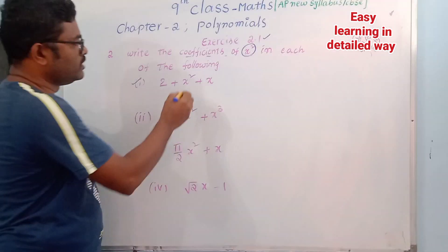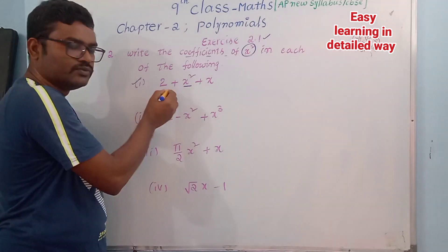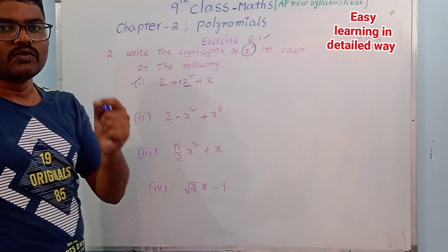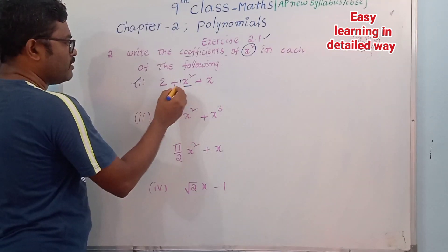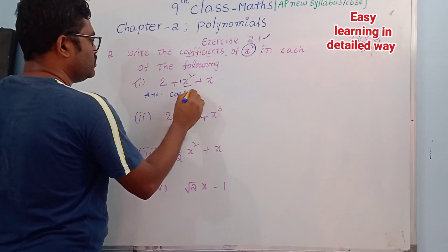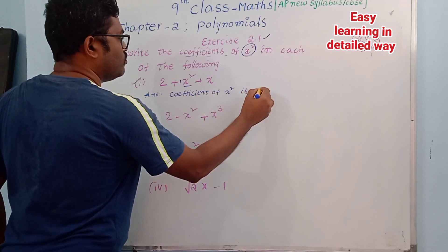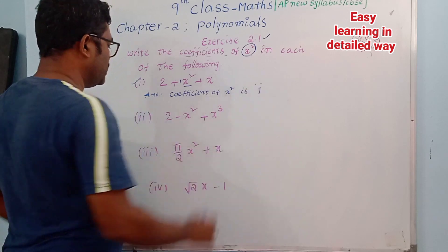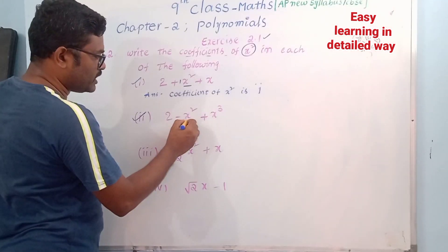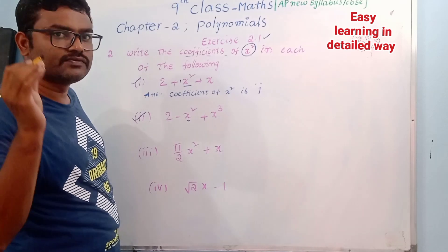First expression: it is x squared. There is only one x squared, so the coefficient of x squared is 1, that is plus 1. Second expression: 2 minus x squared plus x cubed. The x squared term has a minus sign, so the coefficient of x squared is minus 1.